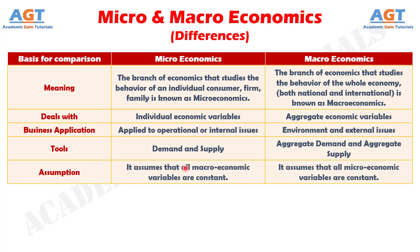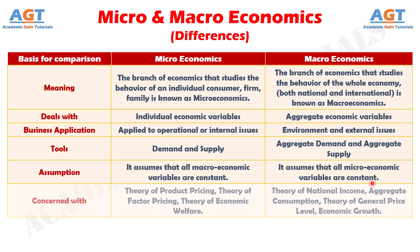Number 5: microeconomics assumes that all macroeconomic variables are constant, whereas macroeconomics assumes that all microeconomic variables are constant. Number 6: microeconomics is concerned with theory of product pricing, theory of factor pricing, and theory of economic welfare, whereas macroeconomics is concerned with theory of national income, aggregate consumption, theory of general price level, and economic growth.